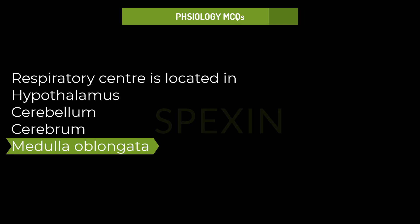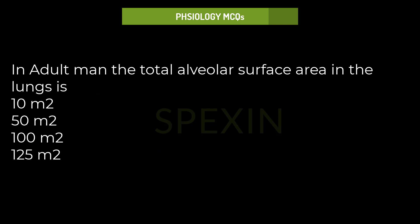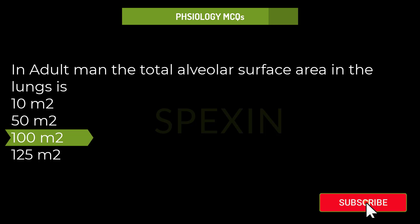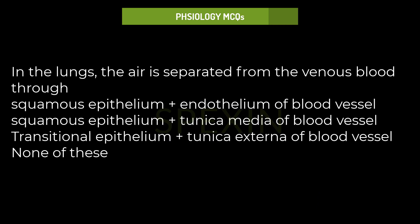In adult man, the total alveolar surface area in the lungs is: 10 square meters, 50 square meters, 100 square meters, 125 square meters. Correct answer: 100 square meters.